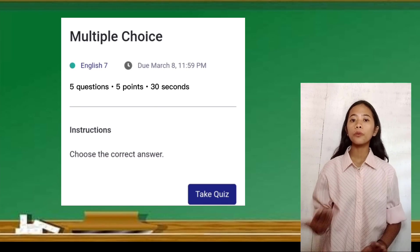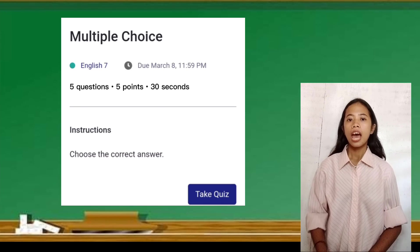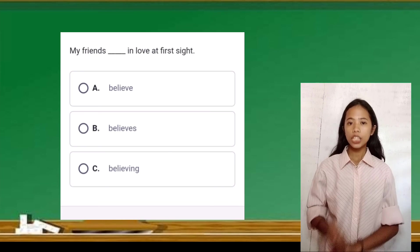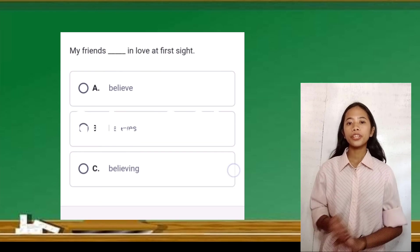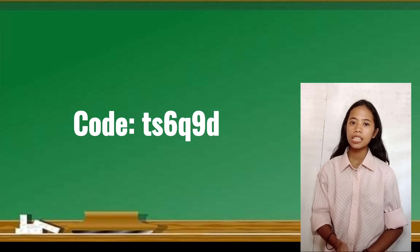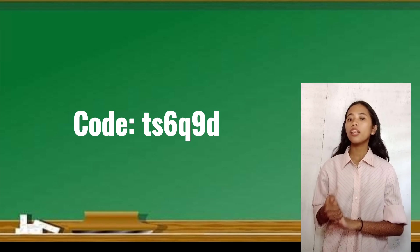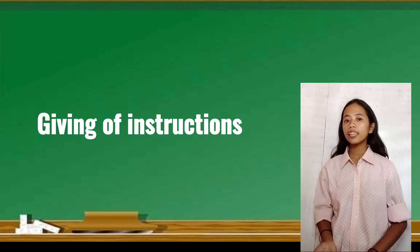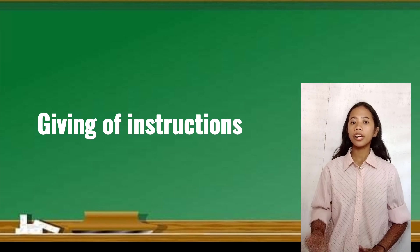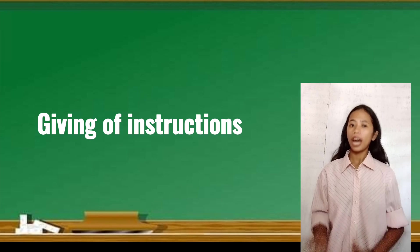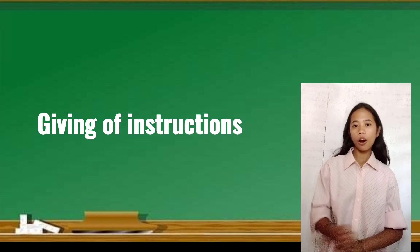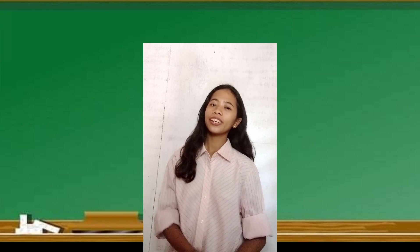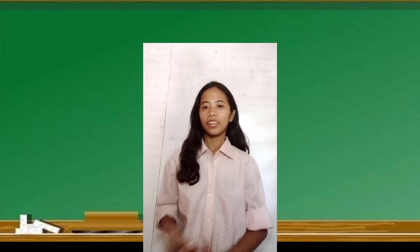So, after this lesson, please proceed to Edmodo because I already posted there the quizzes. I'm giving you 30 seconds to do the task. So, just use this code, small letter t, small letter s, 6, small letter q, 9, and small letter d. So, after that, you can review our topic because in the next meeting, we have a short oral recitation. So, goodbye, class. See you on Monday. So, God bless us all.